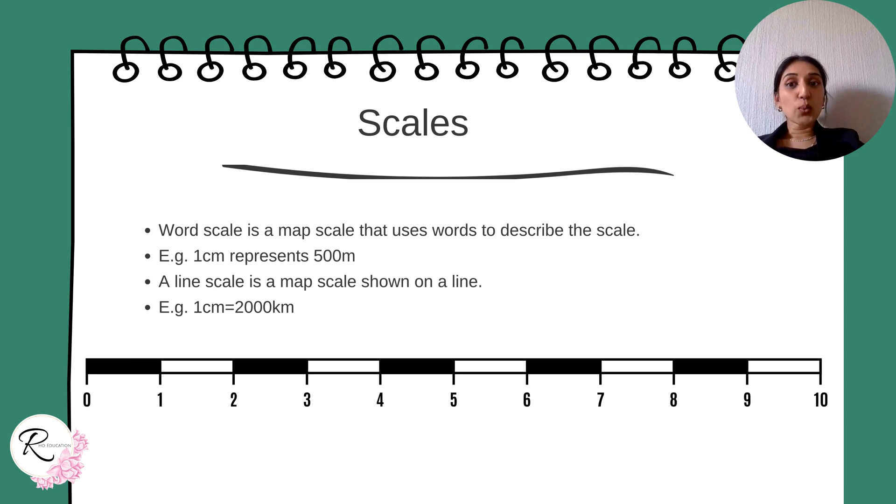Scales: Word scale is a map scale that uses words to describe the scale or ratio. Example: 1 centimeter represents 500 meters. A line scale is a map scale shown on a line. Example: 1 centimeter equals 2000 kilometers in real life.